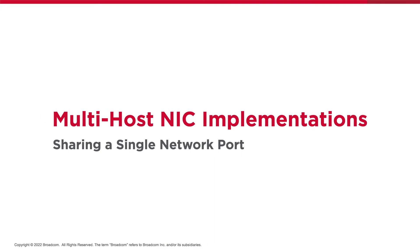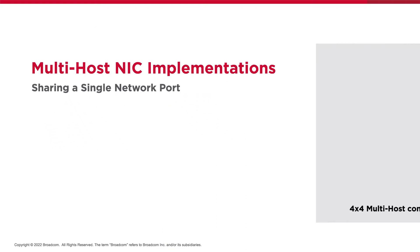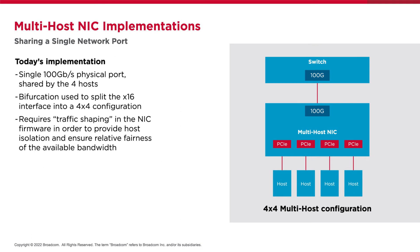The graphic on the right represents today's traditional multi-host implementation — a four-by-four configuration, four hosts by four lanes each, connected to a 100 gig multi-host NIC. From the network port side, we have a single port linked at 100 gig, shared by four hosts. The hosts will each see that there is a 100 gig link; however, the NIC firmware is utilized to provide host isolation and ensure relative fairness via traffic shaping, preventing any single host from utilizing more than its fair share. Each host is limited to around 25 gig. Certain things inherent to this design — such as flow control and changing speeds — will impact all hosts because they share the same port.